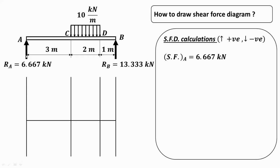Starting with point A: there is an upward acting reaction Ra, and since upward forces are positive, the shear force at point A is 6.667 kN positive. Between A and C, and exactly at C, there is no other force acting, so the shear force remains the same. Shear force at C-left and at C are both 6.667 kN. At point C, the UDL begins but since it is the starting point, 10 into the distance equals zero.